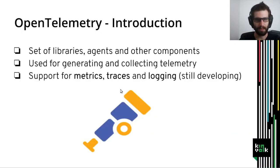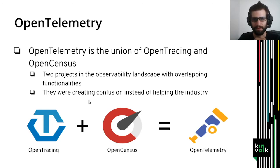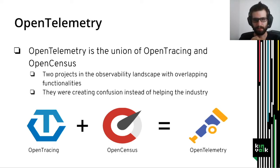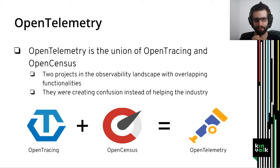Let's continue with OpenTelemetry. OpenTelemetry is a set of libraries, agents, and other components used for generating and collecting telemetry. OpenTelemetry supports metrics, traces, and logging — though logging is still being developed. OpenTelemetry is the union of the OpenTracing and OpenCensus projects. Those two similar projects had overlapping functionalities and were creating confusion, so their communities decided to combine their forces and create a single new project. OpenTelemetry is going to be the next major release of OpenTracing and OpenCensus, which will be deprecated once OpenTelemetry is generally available.